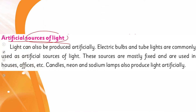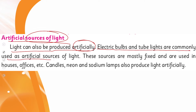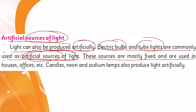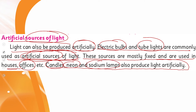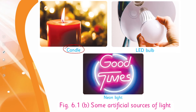Artificial sources of light: light can also be produced artificially. Electric bulbs and tube lights are commonly used as artificial sources of light. These sources are mostly fixed and are used in houses. Examples of artificial sources include candles, LED bulbs, and neon lights. These are all artificial sources of light used in our homes.